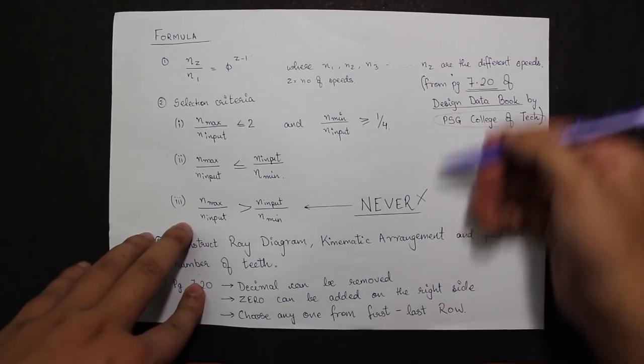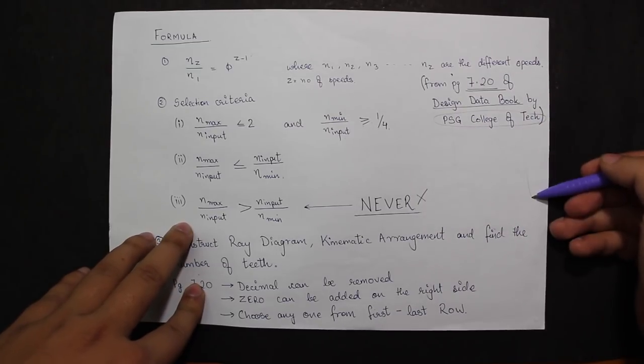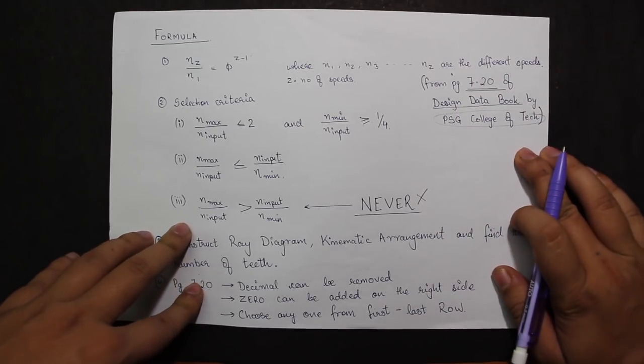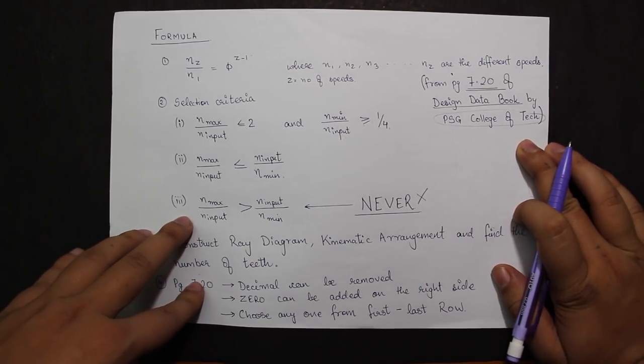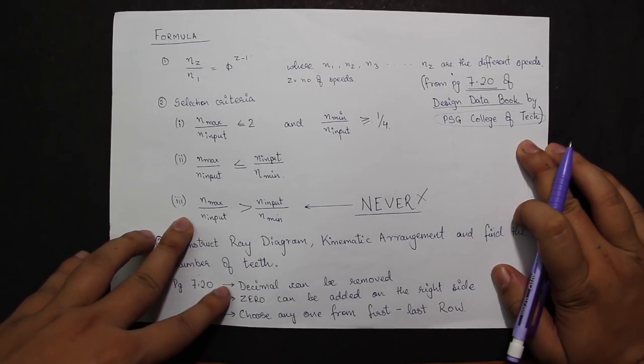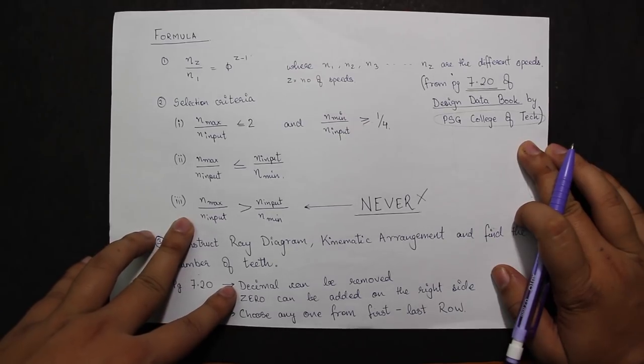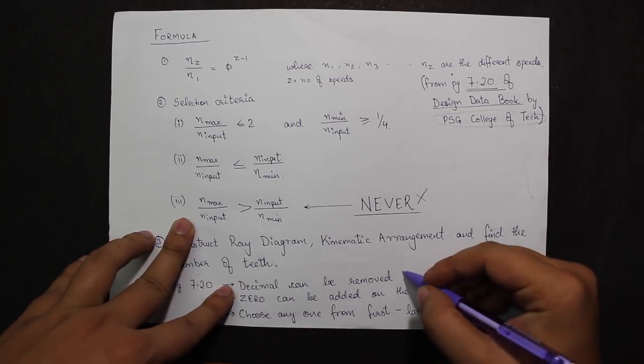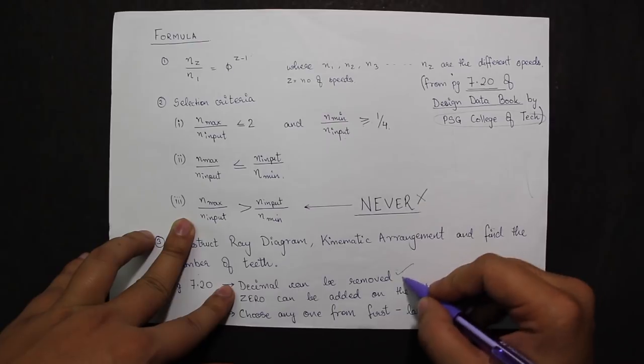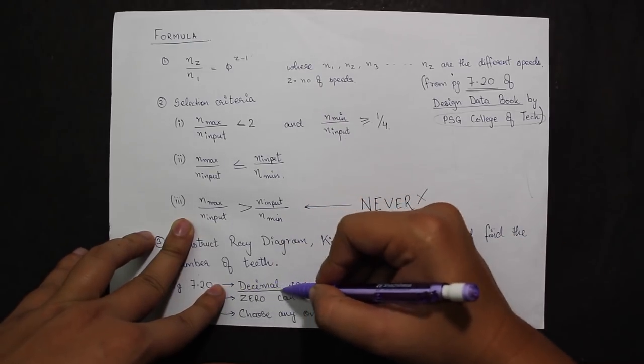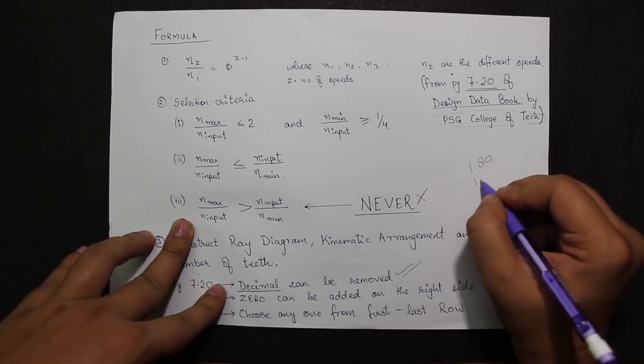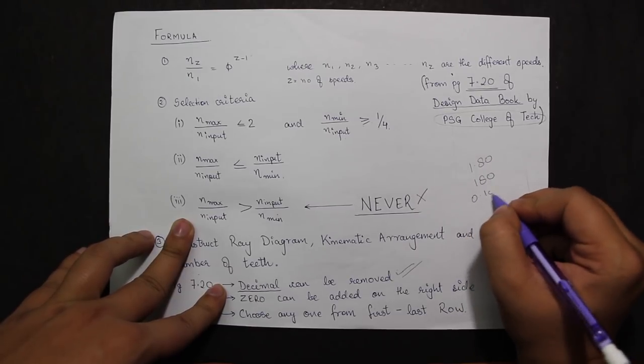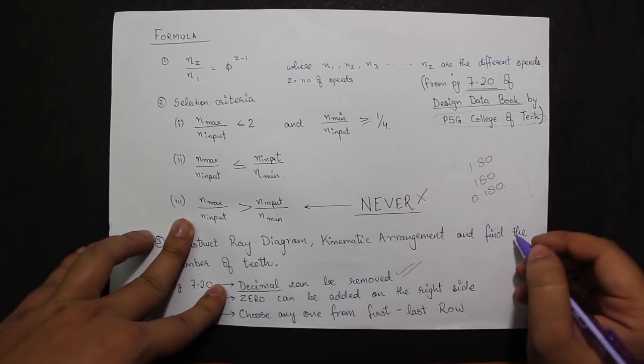On page 7.20 we have a tabular column with four different columns and a number of rows. Selection of which number is required will be told according to the question. We just have to keep in mind these three points: the decimal can be removed from any of the numbers. For example, 1.80 can be taken as 180 or 0.180 or anything.